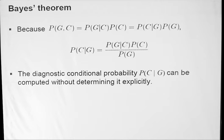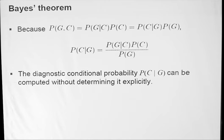So if you want to compute the probability of C given G — the probability of having cancer given the oncogene — you use this definition: the joint probability equals the conditional probability of G given C times the probability of C, which equals the probability of C given G times the probability of G. If you use this and substitute it in, you get Bayes' theorem, which is an extremely useful theorem. You can then compute this diagnostic conditional probability of having cancer given the overexpression of the oncogene without determining it explicitly, just using the other probabilities that are easier to assess.